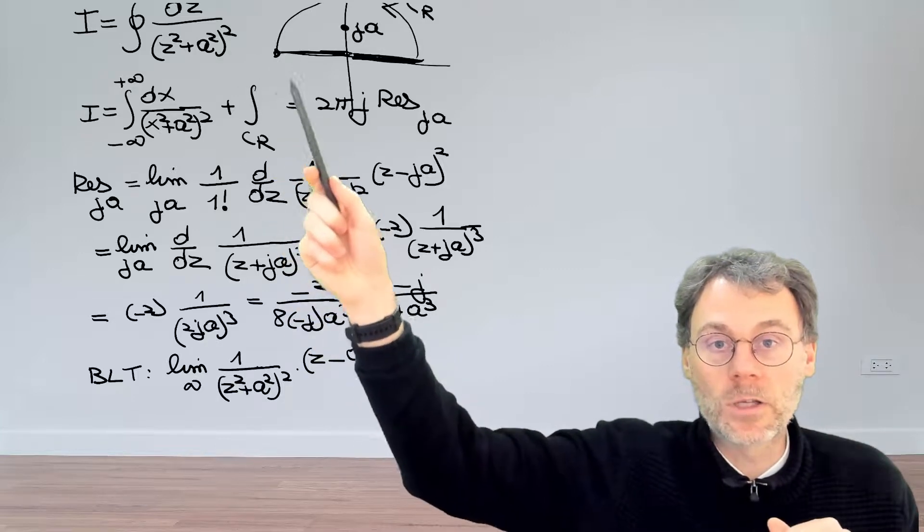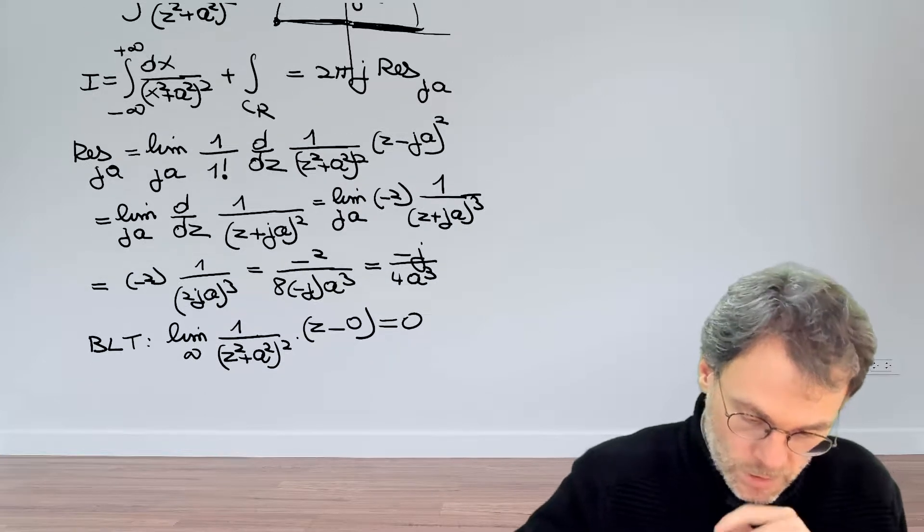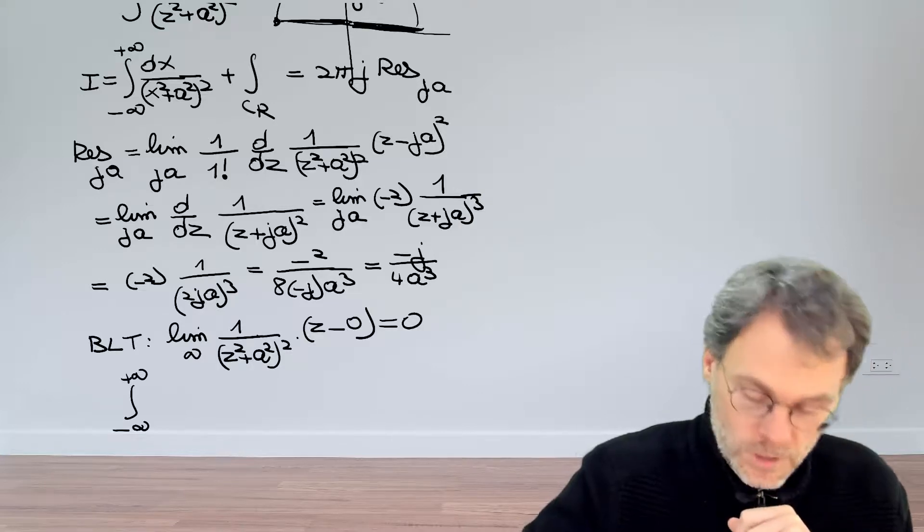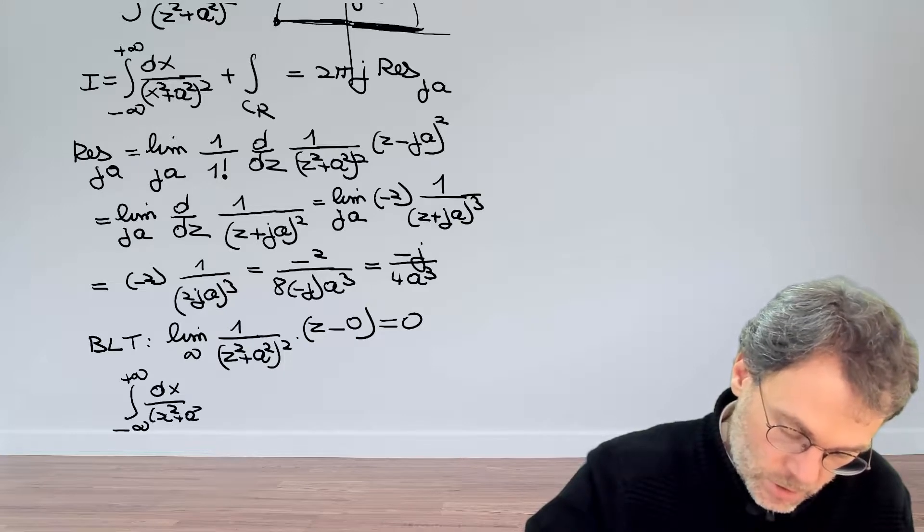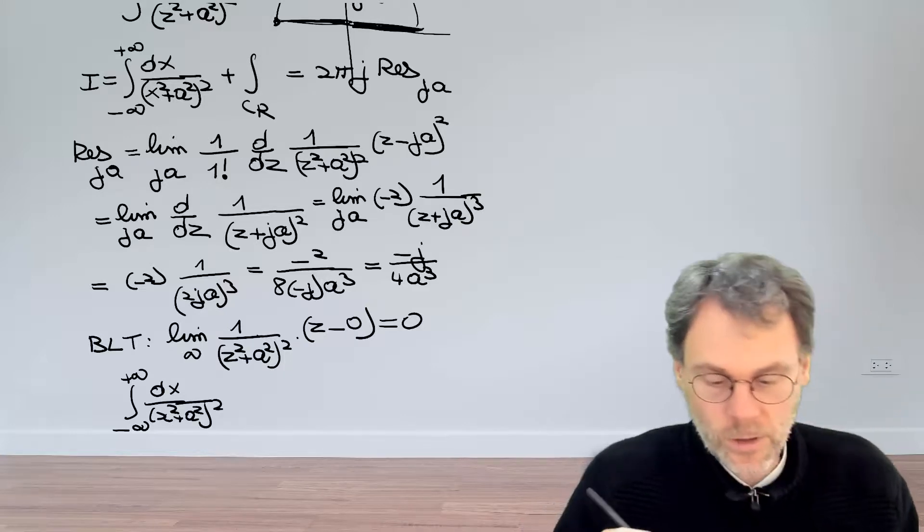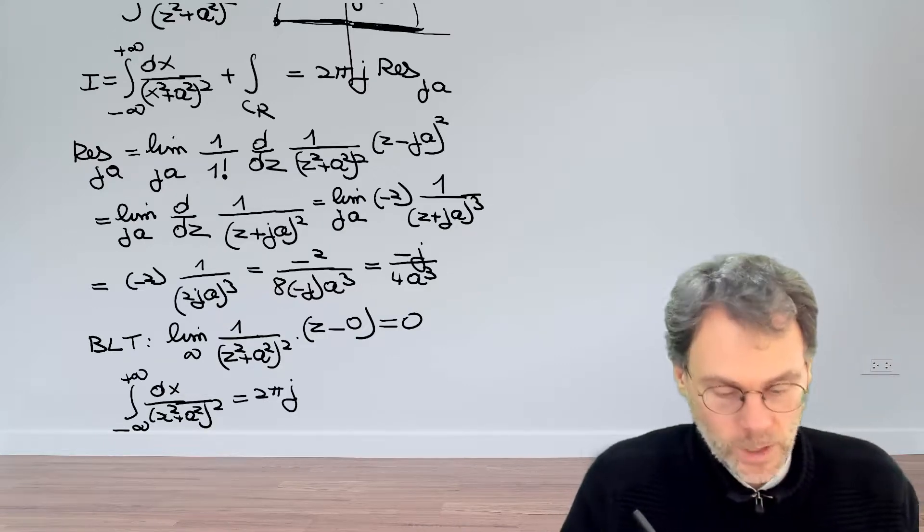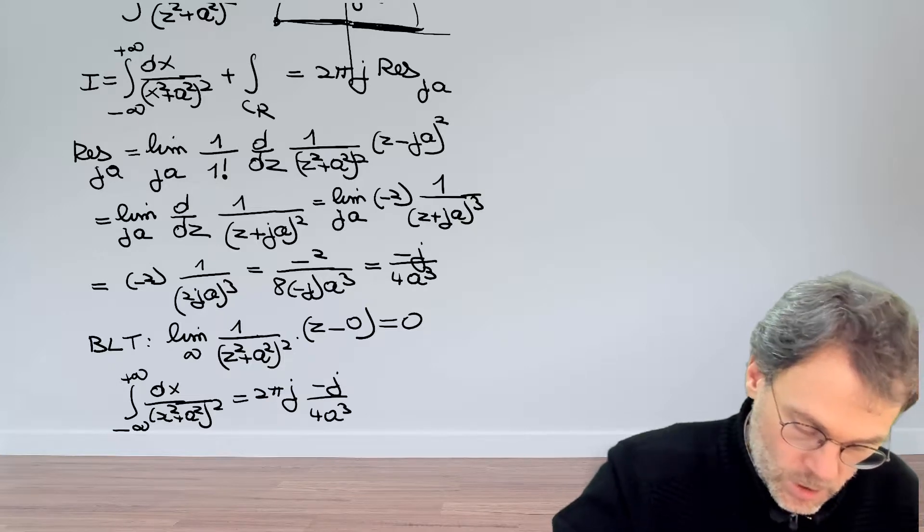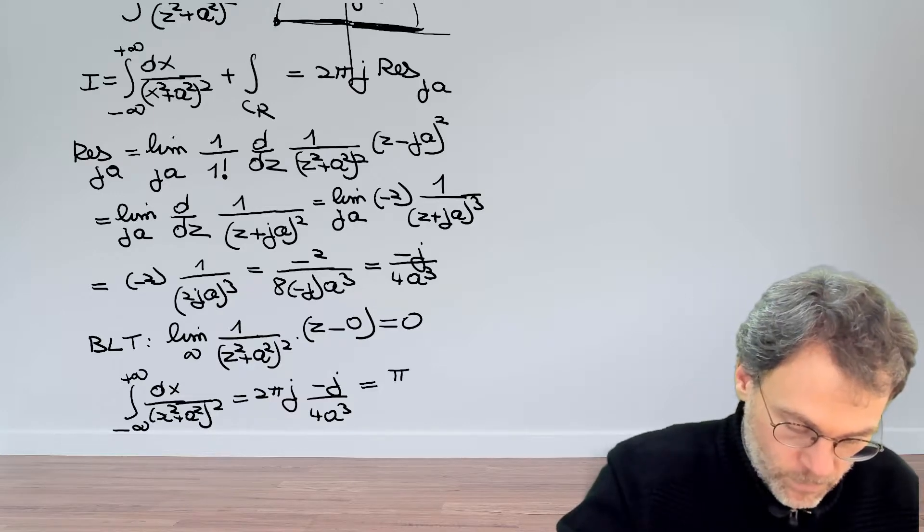So now we're basically almost there. We can write down that the integral of minus infinity plus infinity dx over x squared plus a squared squared is equal to 2πj, the residue which we spent some time calculating, minus j over 4a cubed. So this becomes π over 2a cubed.